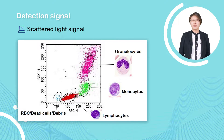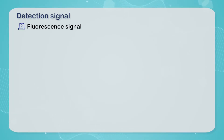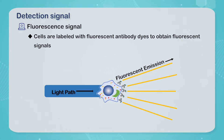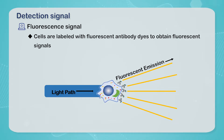A useful example of this is when running blood samples on the flow cytometer — three main populations of leukocytes can be separated. As well as separating cells based on forward and side scatter, cells can also be separated by whether they express a particular protein.